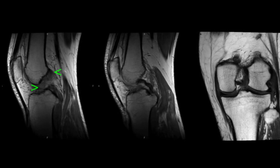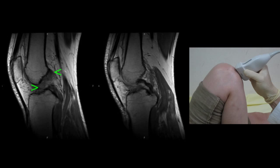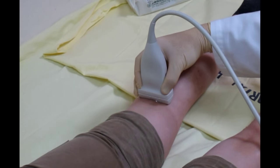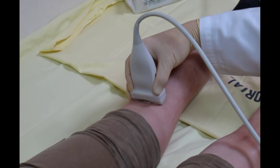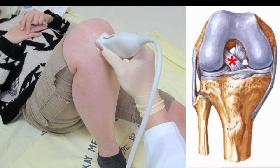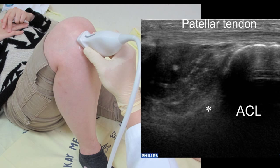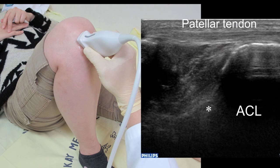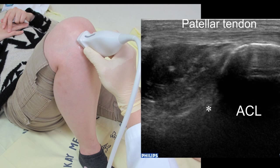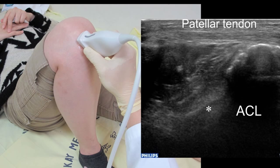Since the anterior cruciate ligament is deeply embedded in the joint, it is impossible to access the entire ligament by ultrasound. The ligament can be partially seen from the anterior side with extreme flexion of the knee, or evaluated by scanning the intercondylar fossa from the back of an extended knee to assess the associated hemarthrosis. Evaluation of the tibial portion of the anterior cruciate ligament can be performed from the anterior aspect of an extremely flexed knee, by placing the transducer on the patellar tendon and slightly rotating the proximal part of the transducer toward the medial border of the lateral femoral condyle.